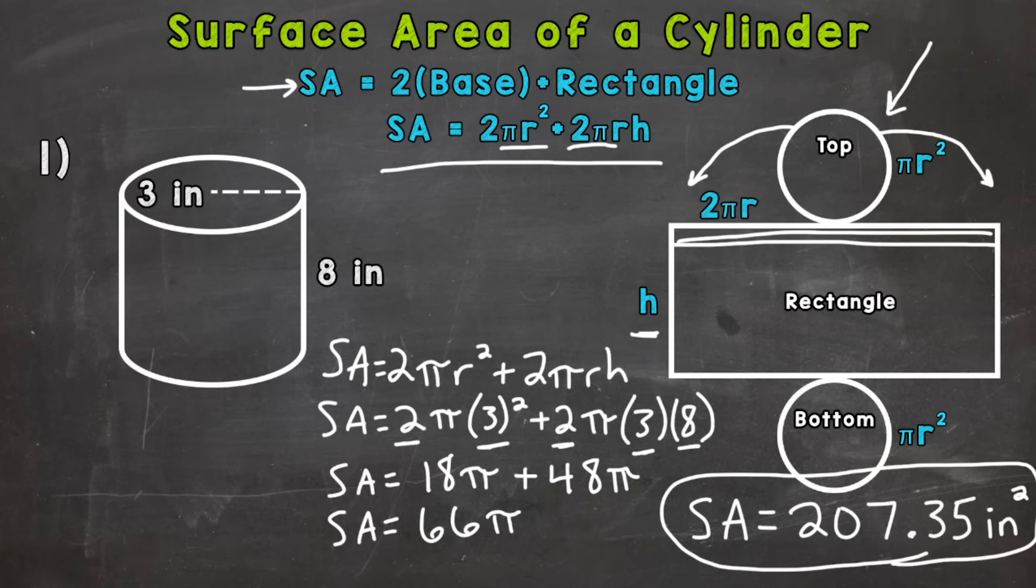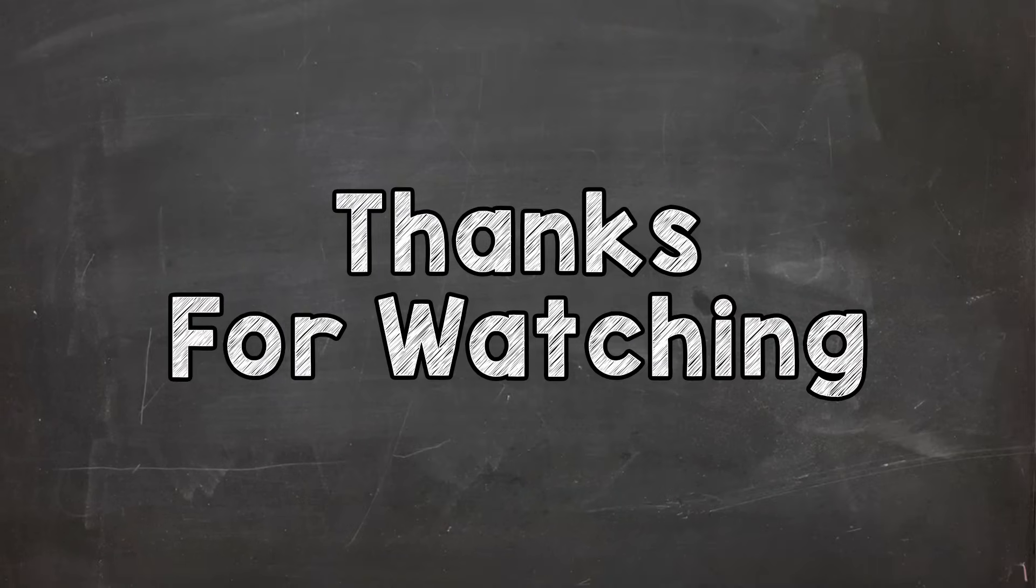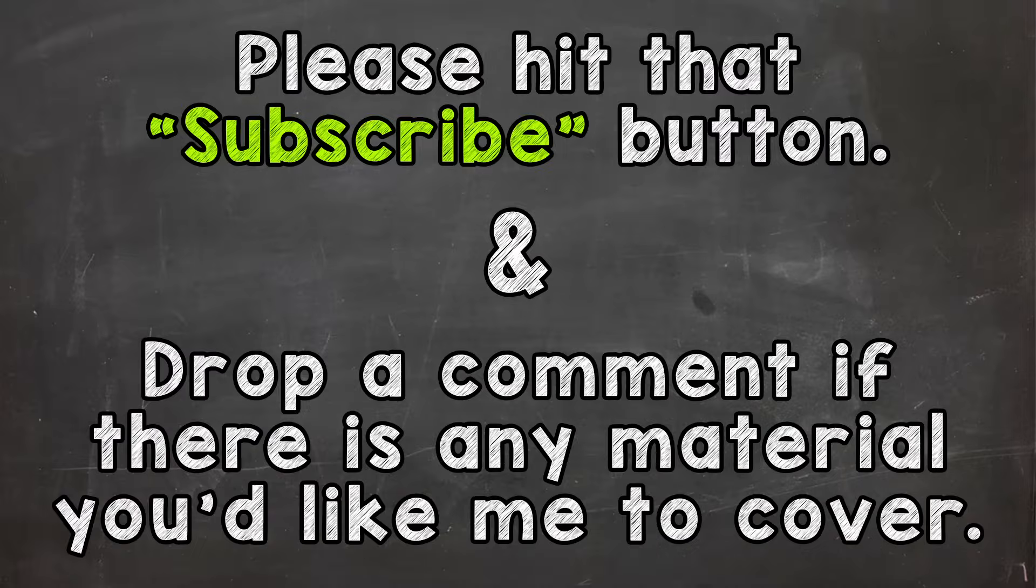There's how you find the surface area of a cylinder. We find the area of the base, the circular top there. We multiplied it by two because we have two circles. And we added that to the area of the rectangle. And we end up with, for this particular example, 207.35 square inches. I hope that helped. Thanks so much for watching. Until next time, peace.